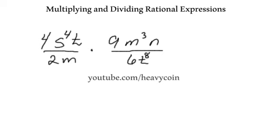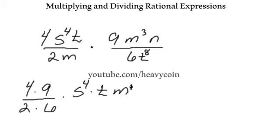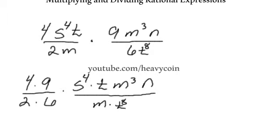Now, let's look at our numbers here. We've got 4 times 9, I'm going to kind of group all these together. And then we have 2 times 6, s to the 4th. There's really nothing we can group together there. t m cubed over n and that's over m times t to the 8th. Okay. Let's look at this piece here.